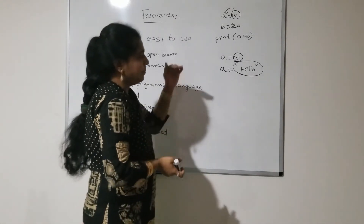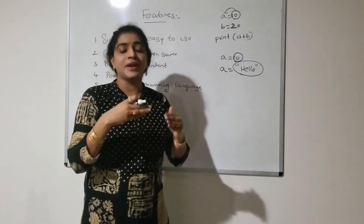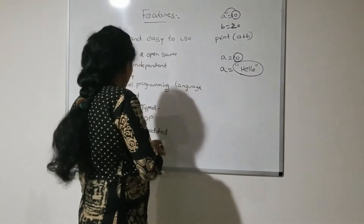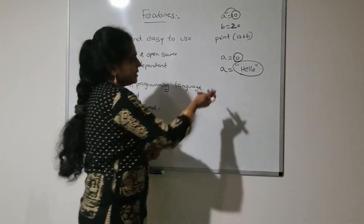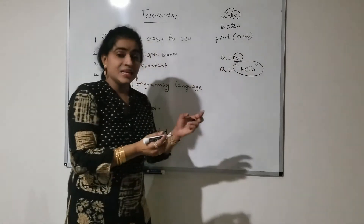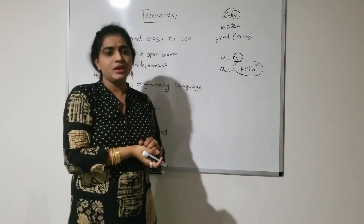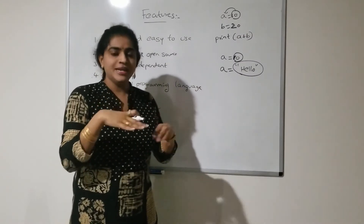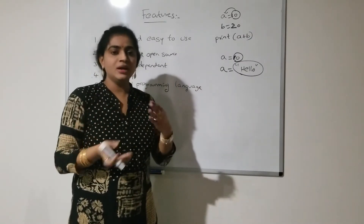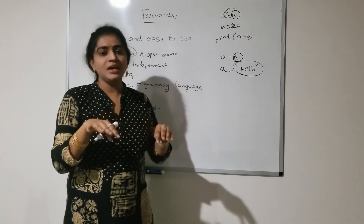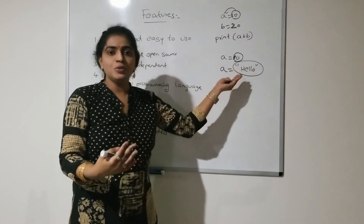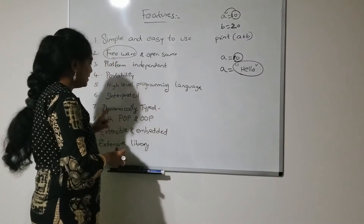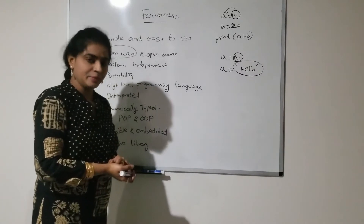Dynamically typed means that the data type is assigned during runtime — runtime means execution time. The main advantage of this is that it is more flexible for the developer. The developer can use the same variable any number of times without declaring the type explicitly. Depending upon the requirement, the value can be changed, which is a flexible thing. Such programming languages are called dynamically typed programming languages.